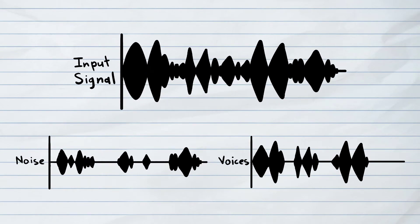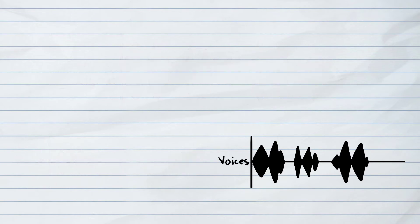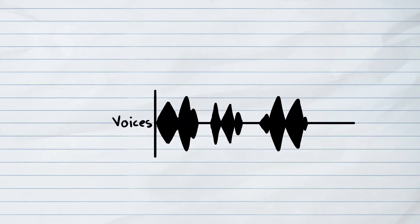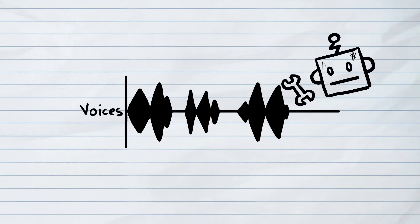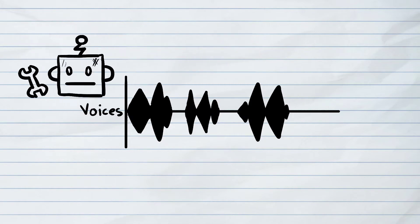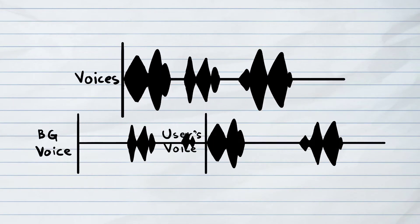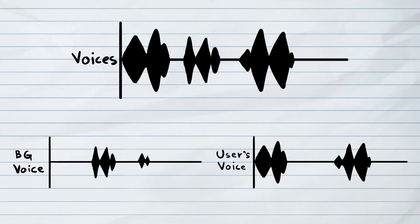These frequencies are analyzed to see which ones are related to your speech and which ones relate to the background noises. Larger companies take it further by implementing machine learning, feeding datasets to the machine to understand which frequencies belong to human speech and which belong to background noises. By doing this, your friend on the other end of the call can understand what you're saying even if you're surrounded by all kinds of background noises.